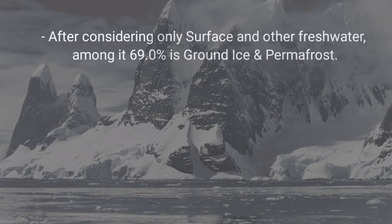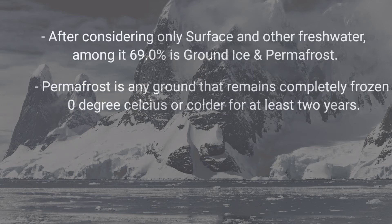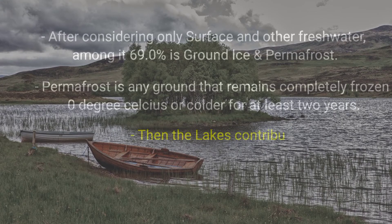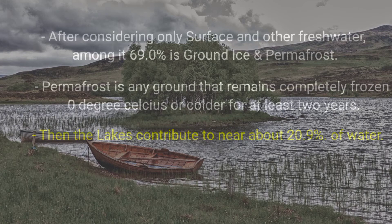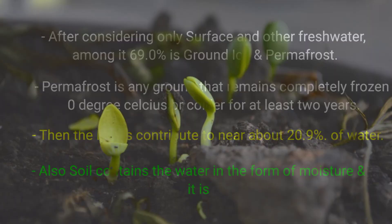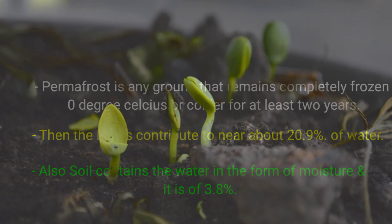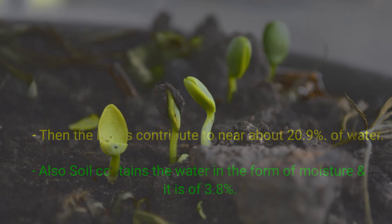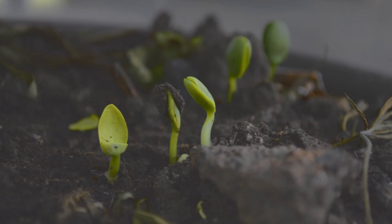Considering only surface and other fresh water, 69.0 percent is ground ice and permafrost. Permafrost is any ground that remains completely frozen at 0 degrees Celsius or colder for at least two years. Lakes contribute nearly 20.9 percent of this water. Soil also contains water in the form of moisture, accounting for 3.8 percent.